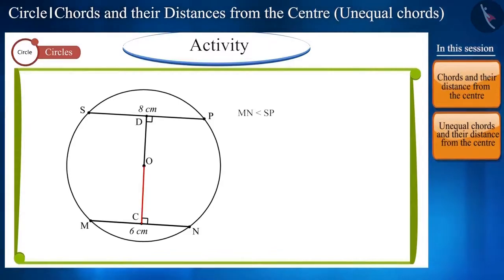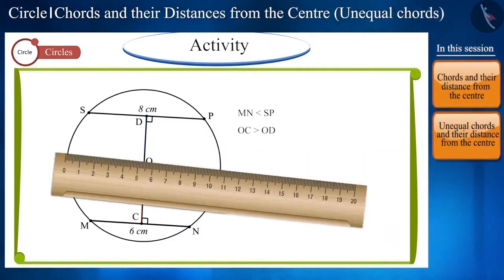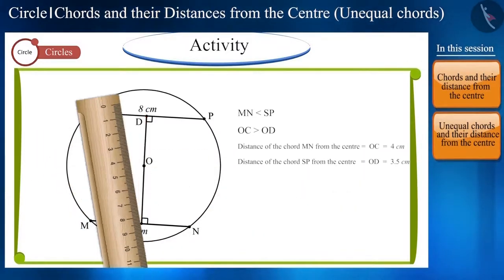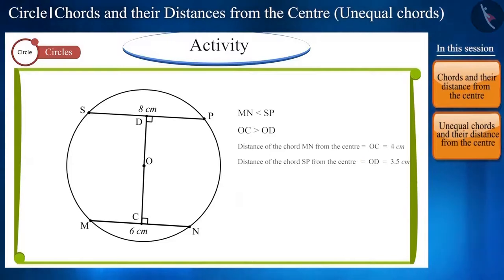draw perpendiculars from the center on both these chords which intersect MN at point C and SP at point D. Here, OC is the distance between the center and chord MN and OD is the distance between the center and chord SP. You can see in the figure that OC is greater than OD. You can confirm this with the help of a scale. You can see that chord SP is greater than chord MN and chord MN is at a greater distance from the center than chord SP.